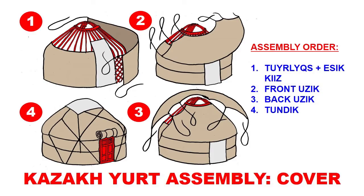Once the wooden frame is in place, the first step is to put the turlukhs over the wall sections, over the kerege or kanats. Two pieces wrap the entire perimeter from left and right. Then we install the felt door. All pieces have ropes attached at the corners, so we tie them securely and it becomes a very solid, well-assembled structure.